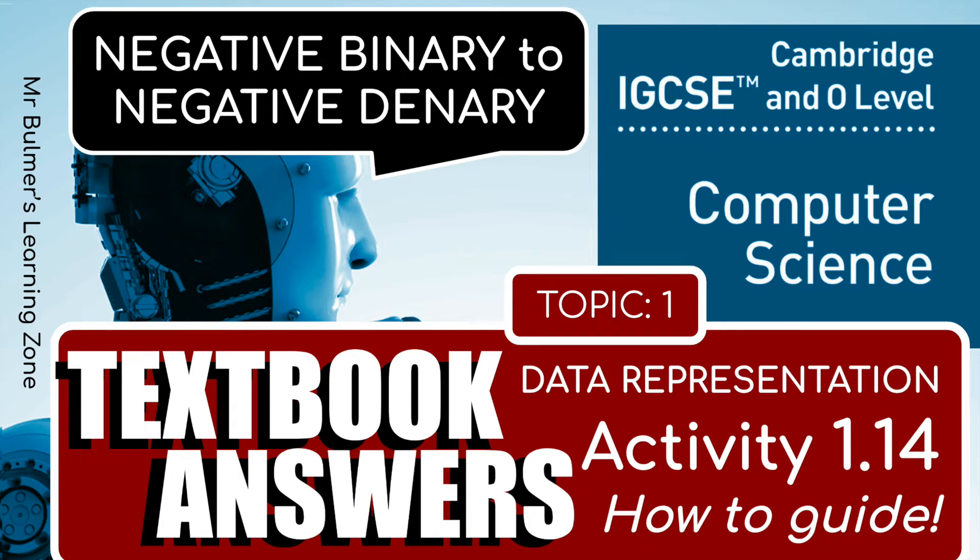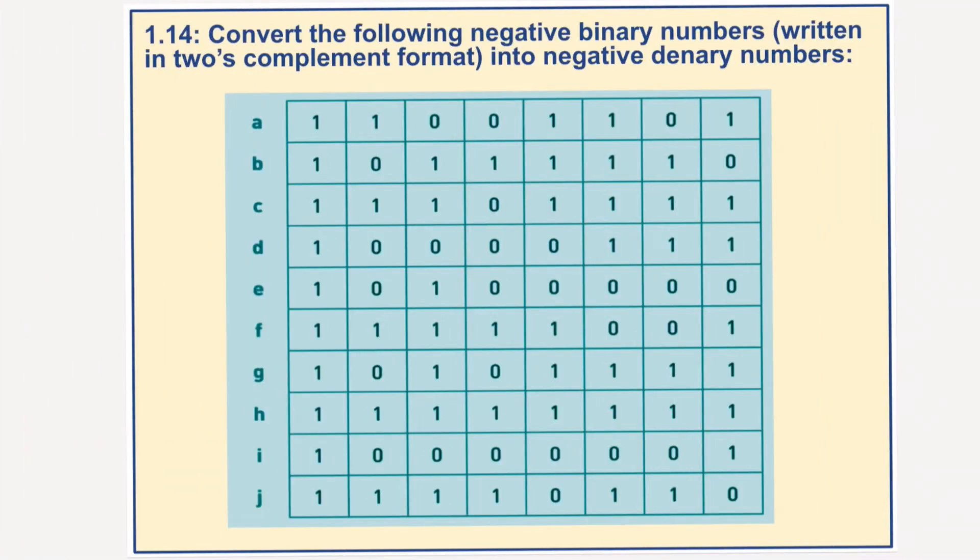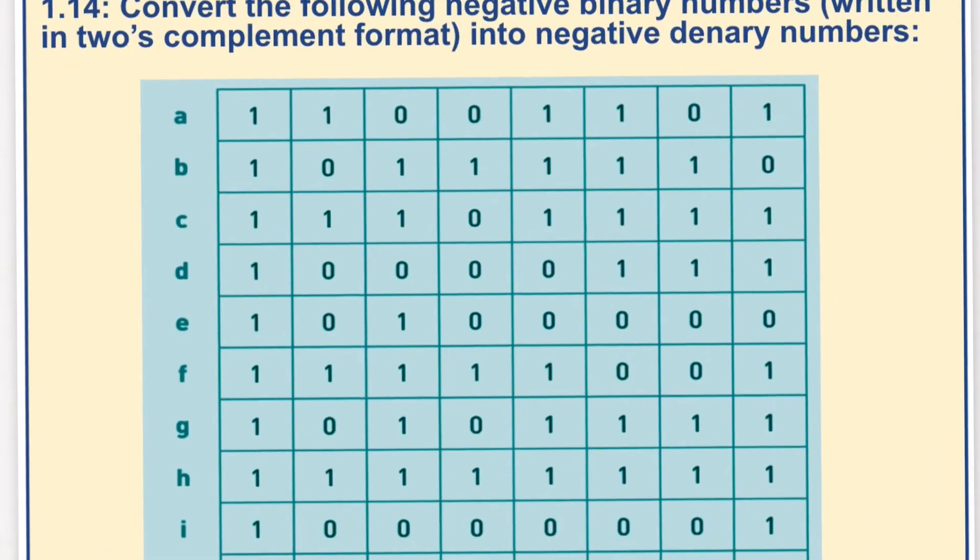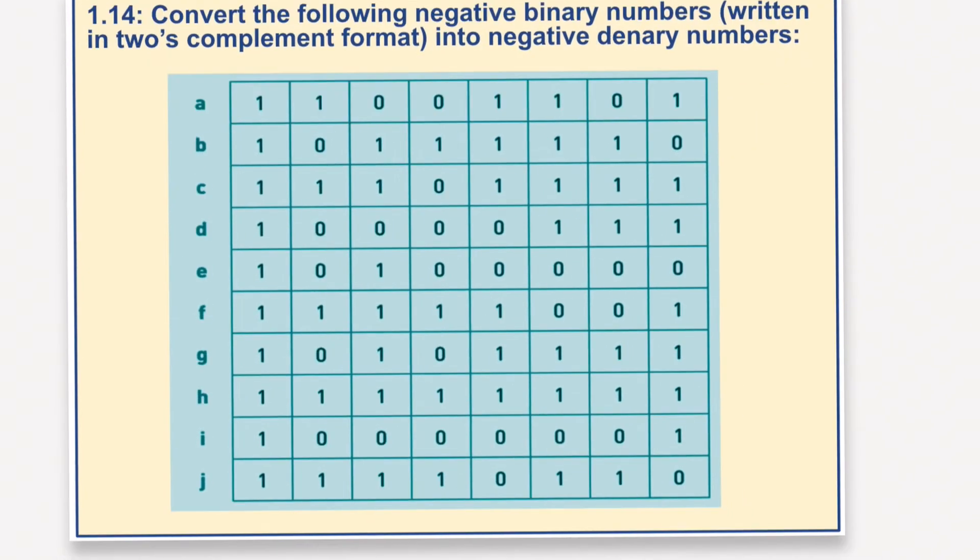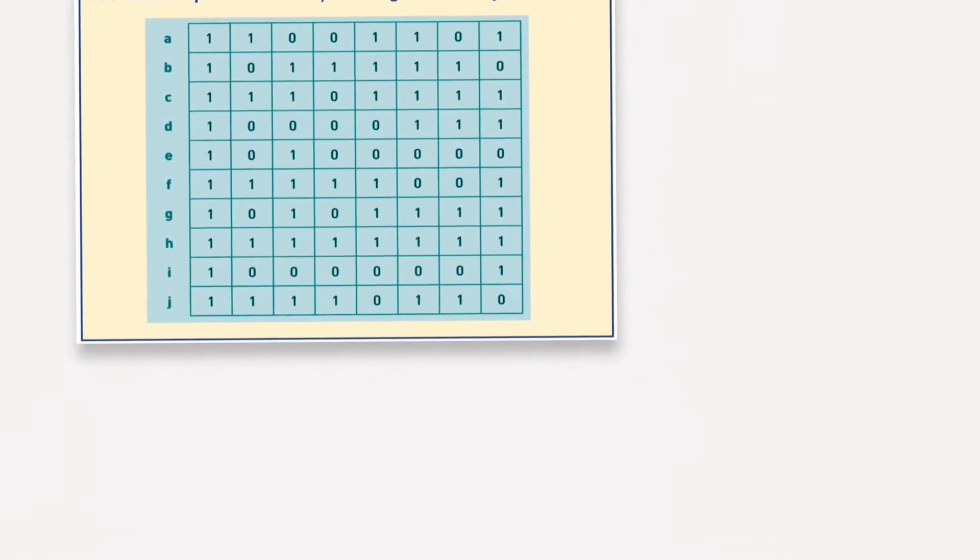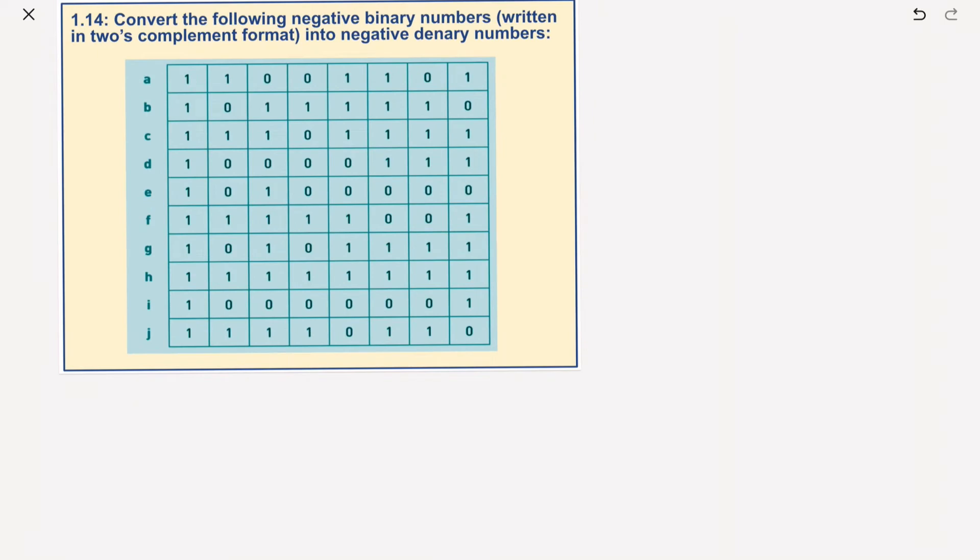Welcome back to 1.14. We're going to be finishing off two's complement and looking at this table and converting these into negative denary numbers. Let's get started. I'm going to move this out of the way a little bit and we'll start with the first one.